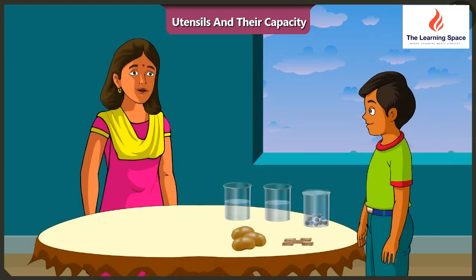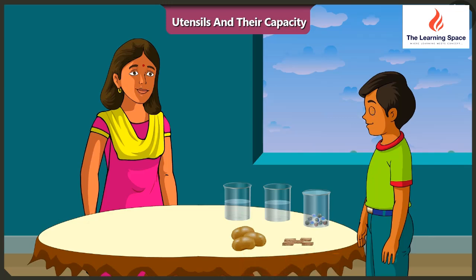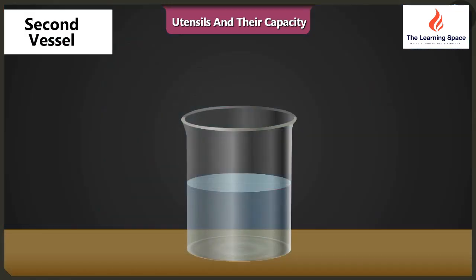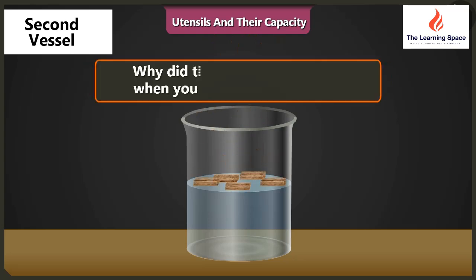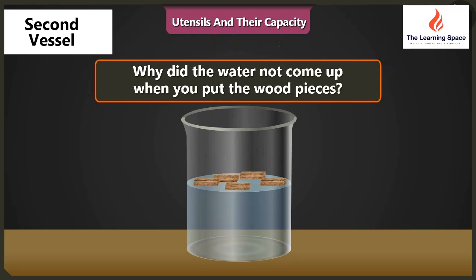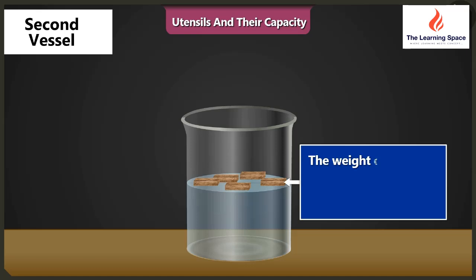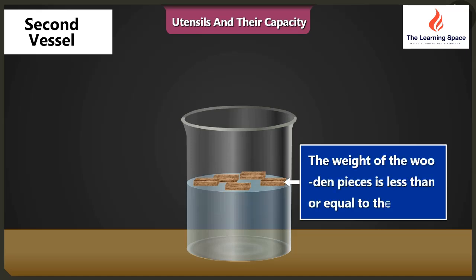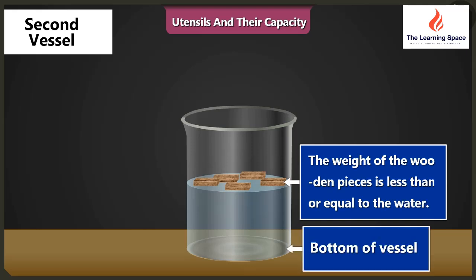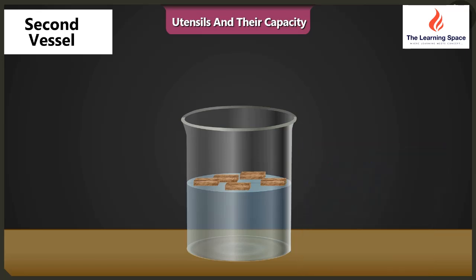Well said, Mishtu. Now put these pieces of wood in another vessel half filled with water. Why did the water not come up when we dropped in the wooden pieces? Because the weight of these pieces of wood is less than or equal to the weight of water in the vessel, so these pieces did not sink to the bottom. This is why the water did not come up.